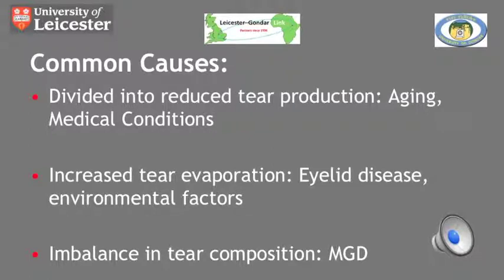The second cause of dry eye, tear evaporation, is often associated with eyelid disease such as ectropions and entropions. Environmental factors such as wind, smoke, and dry air also contribute.